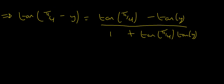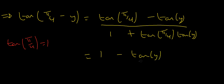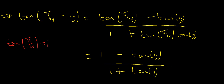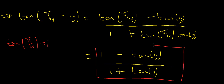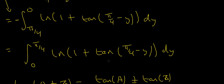Now I know that tan(π/4) equals 1 — you can show this using tan equals sine over cosine, and sin(π/4) and cos(π/4) both equal √2/2. So tan(π/4 minus y) simplifies to (1 minus tan y) divided by (1 plus tan y). I'll now replace tan(π/4 minus y) in the integrand with this expression.